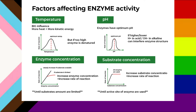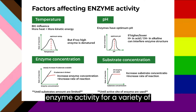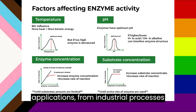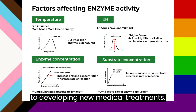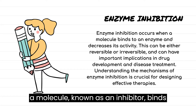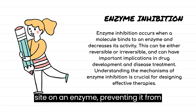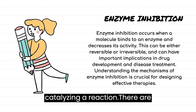By understanding these factors, scientists can manipulate enzyme activity for a variety of applications, from industrial processes to developing new medical treatments. Enzyme catalysis inhibition occurs when a molecule, known as an inhibitor, binds to the active site or another specific site on an enzyme, preventing it from catalyzing a reaction.